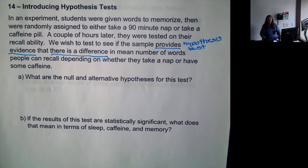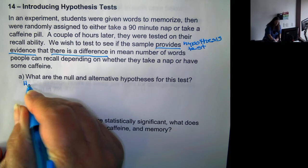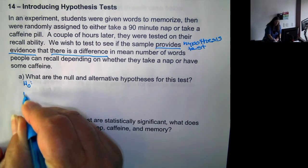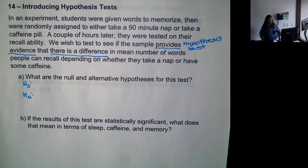And the hypotheses are always set up using the population parameters. The null hypothesis is H sub 0. The alternative is H sub A, although in some texts you might see it as H sub 1.